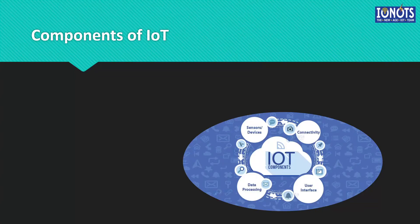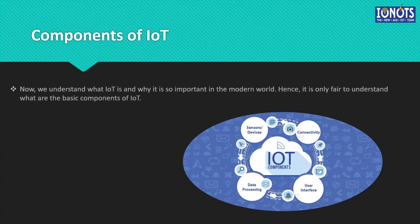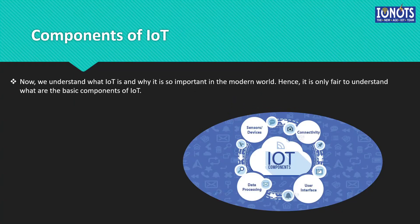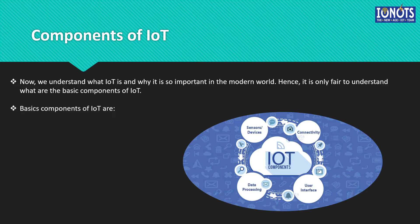Now, let us look into the different components of IoT. We understand what IoT is and why it is so important in the modern world. Hence, it is only fair for us to understand what are the different basic components of IoT. The basic components of IoT are as follows.